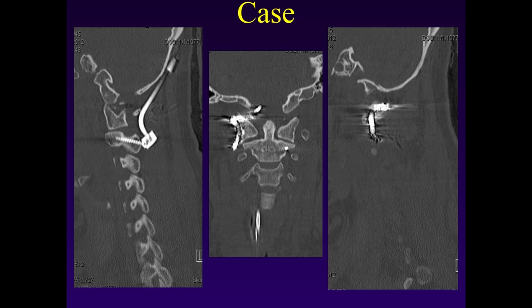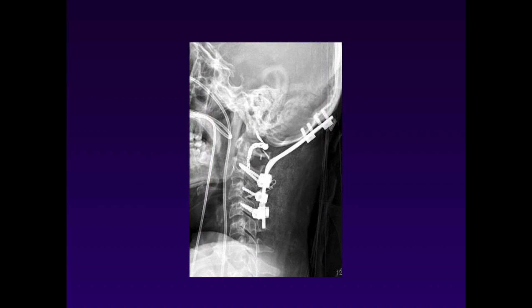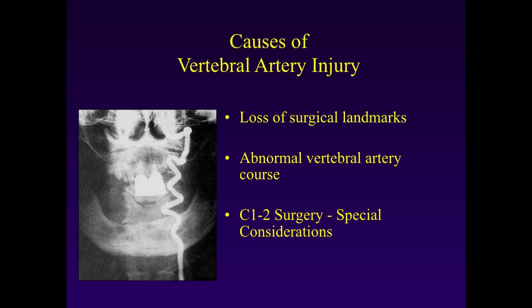The patient was then fixed temporarily with a C2 pedicle screw and occipital plate and taken to angiogram, where embolization of the V3 segment of the vertebral artery was performed. She was then brought back to the operating room two days later for definitive fixation of the occipito-cervical spine. She did well after recovery from her trauma with a normal motor exam and no evidence of intracranial infarct.